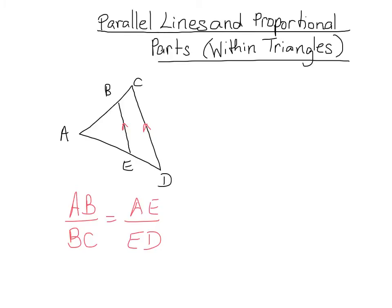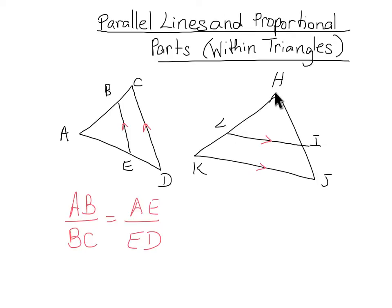We could go ahead and do a different parallel line and the same thing would happen. So let's call this one H, I, J, K, L. Now it's parallel to the bottom, which means that, as you can see, that's one part and that's one part on the left. So, HL over LK is going to be equivalent to HI over IJ. All these parallel lines do is chop our triangle segments into proportional parts.